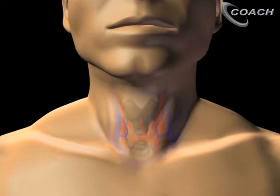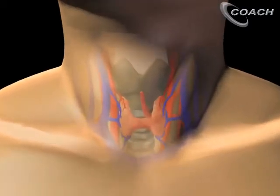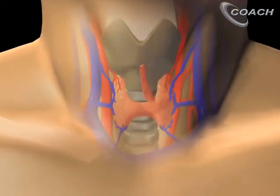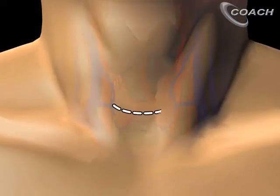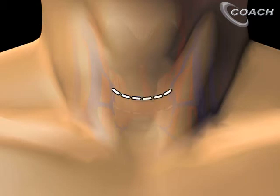This animation will show the basic technique for a minimally invasive thyroid lobectomy. The best incision is placed over the isthmus of the thyroid, but the key consideration is that it should be placed in a natural skin line, which is usually slightly above the isthmus.